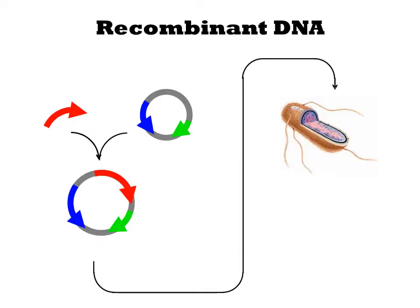Synthetic biology is about rewriting the DNA code in an organism to change its behavior. Suppose you wanted to make green glowing bacteria. You know that this can be achieved by encoding the green fluorescent protein, GFP, in a DNA and stably replicating that DNA within an E. coli cell.